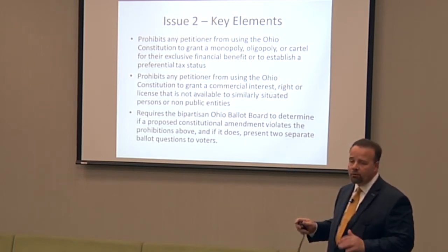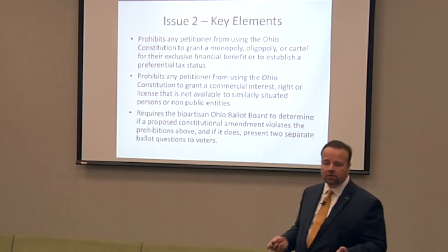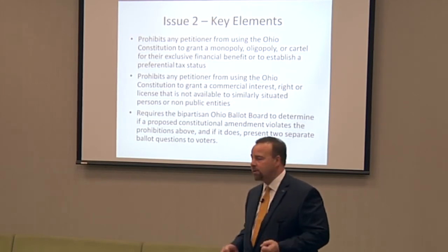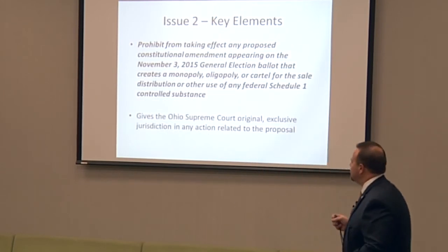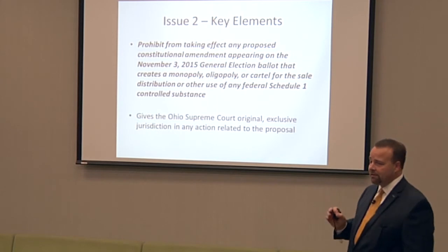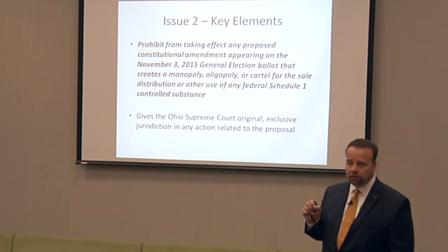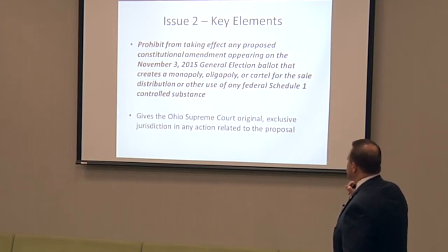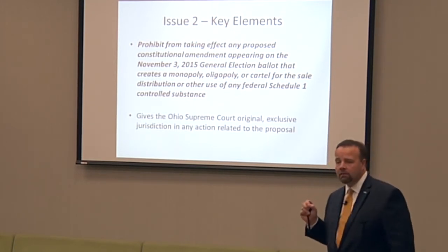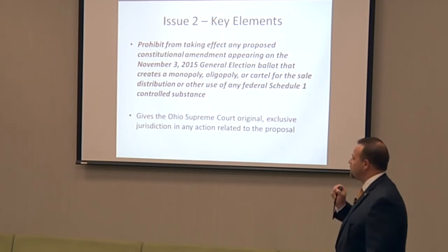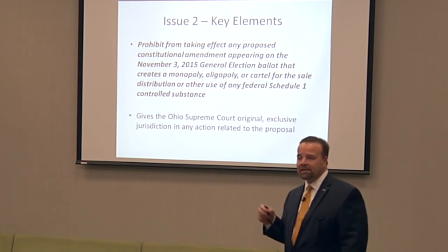And if it does, the ballot board would move forward with the issue, but they'd have to change the way in which you approach it, which I'll explain in a minute. Finally, it specifically says that any constitutional amendment appearing on the November 3rd ballot that creates a monopoly, oligopoly, or cartel — ten farmers — for the sale or distribution or any other use of any federal Schedule 1 controlled substance, marijuana, would not take effect.